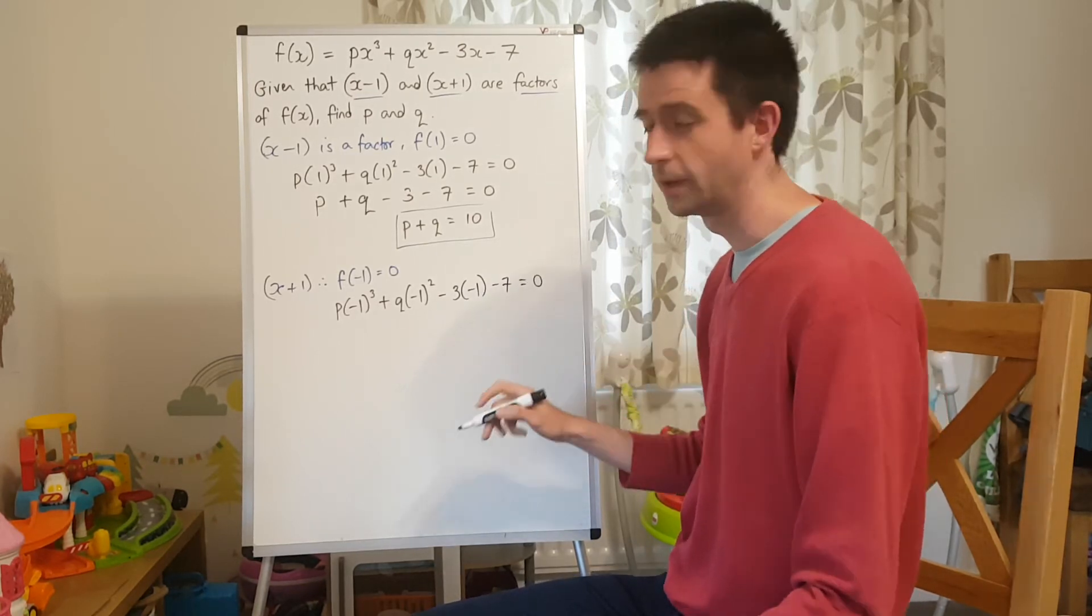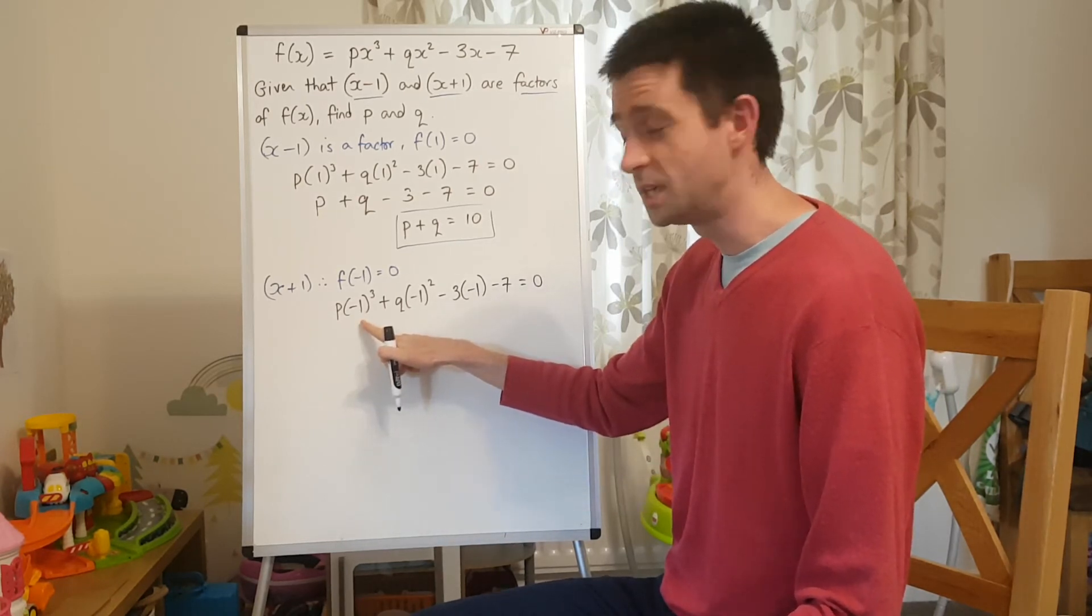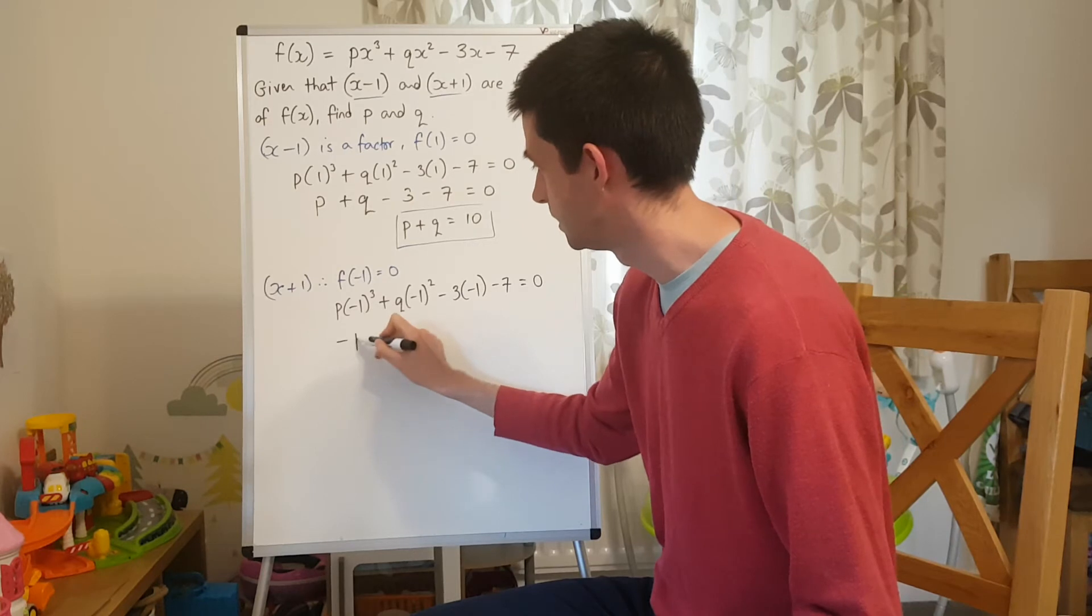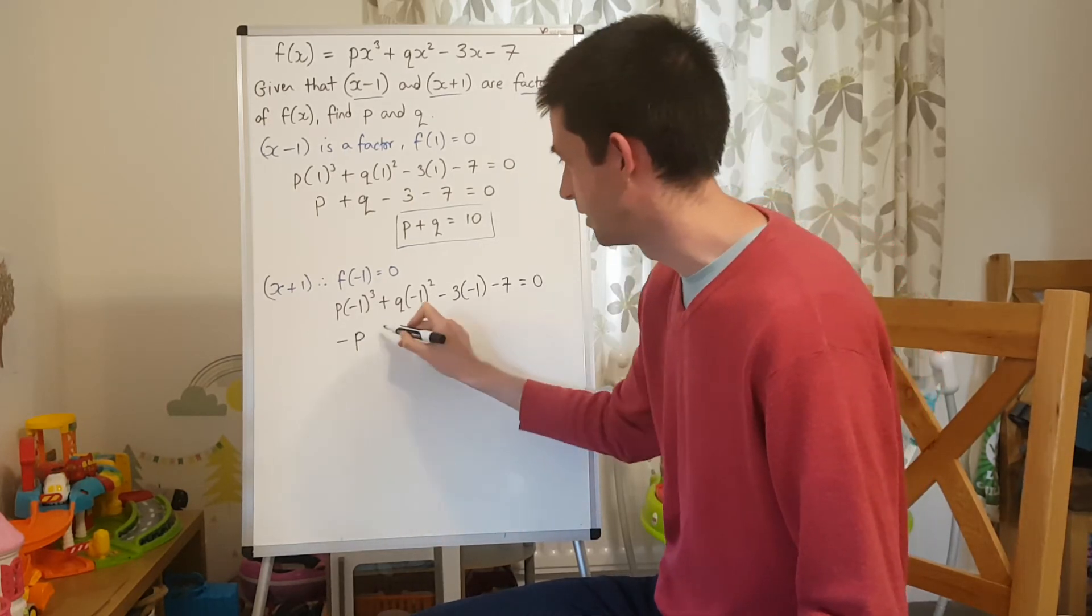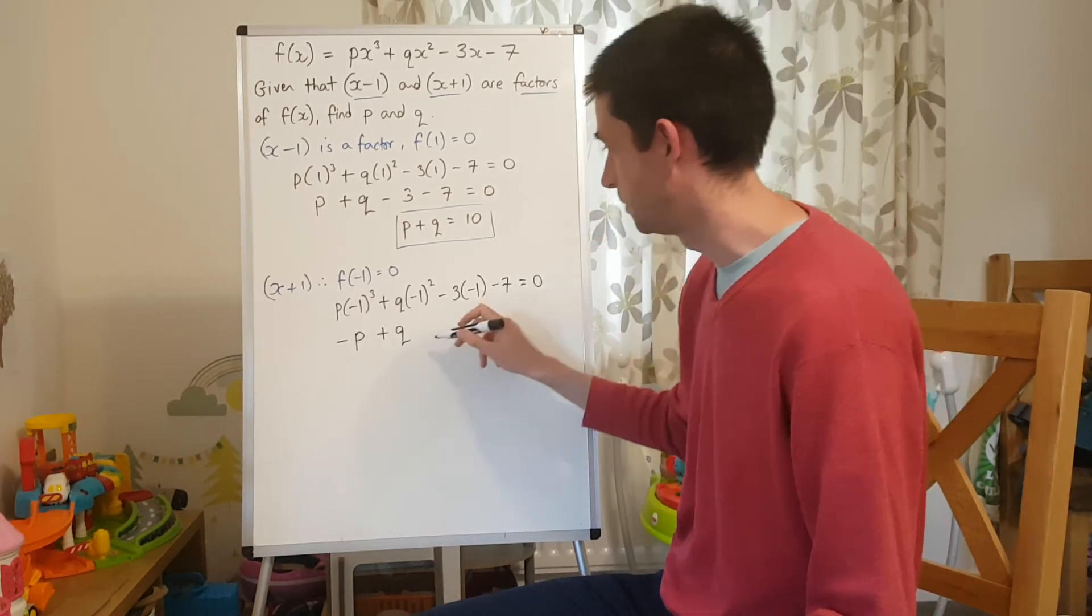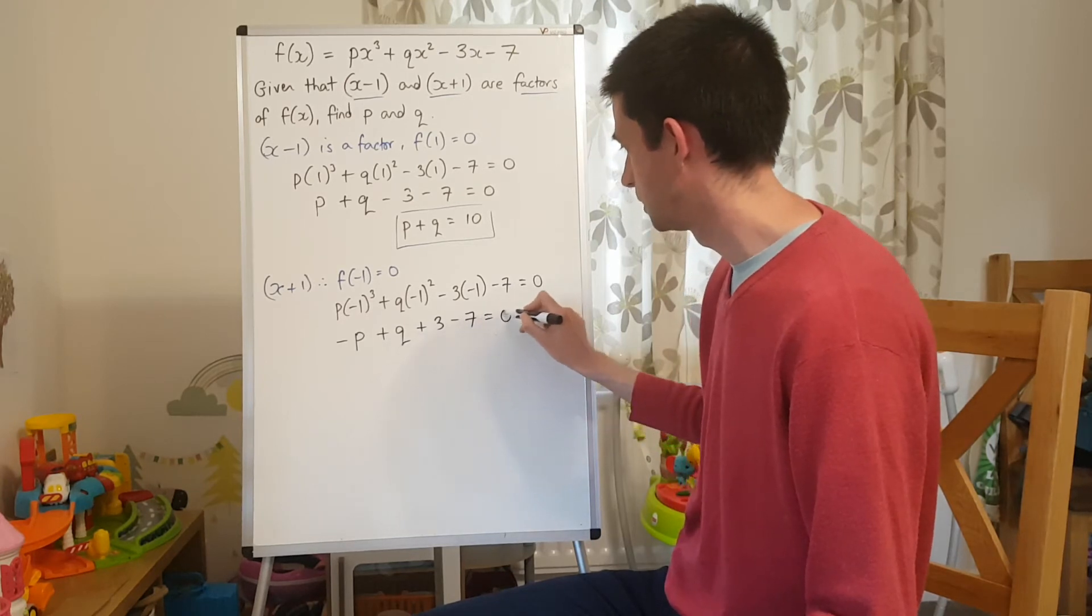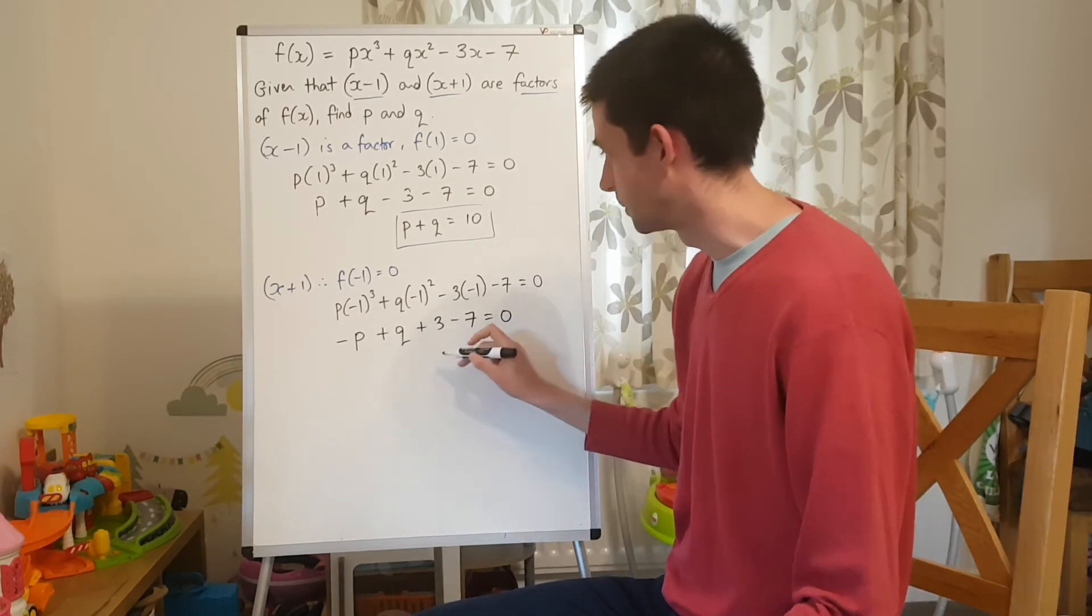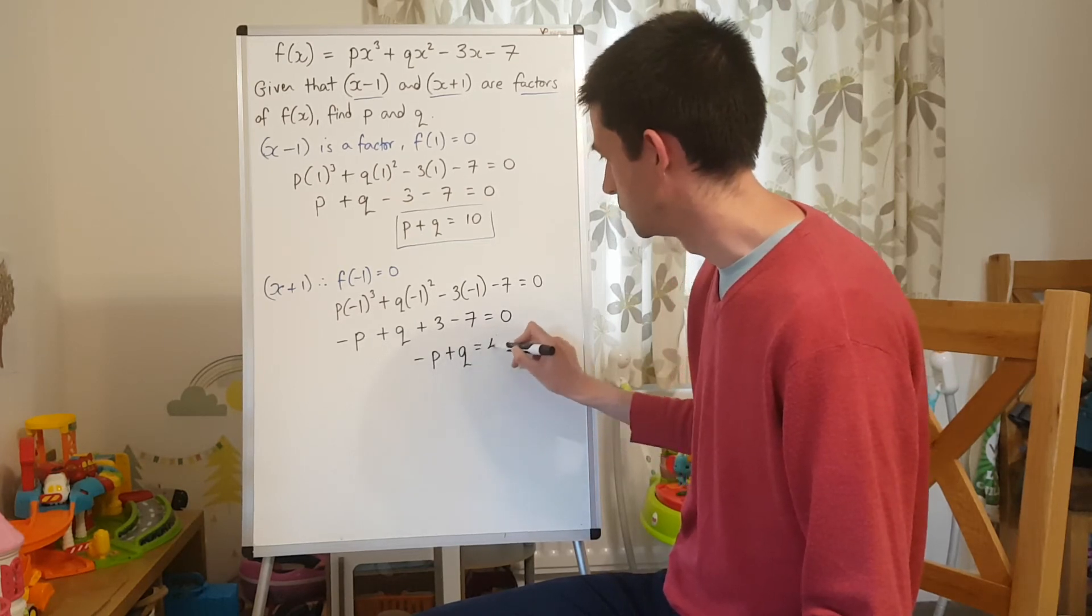Now, just be really careful with signs here. (-1)³ is -1, so we have -p. (-1)² is positive 1, so we have +q. -3 times -1 is +3. Subtract 7 equals 0. So, I'm going to write that one as -p + q = 4.